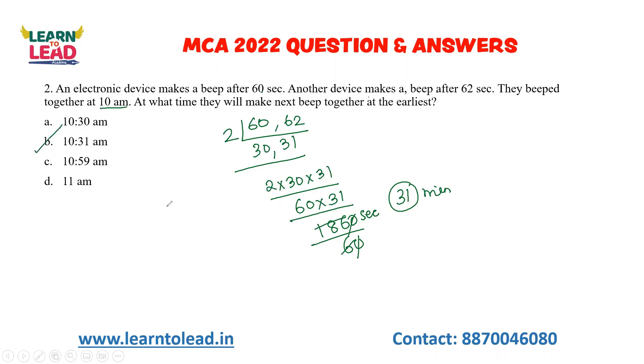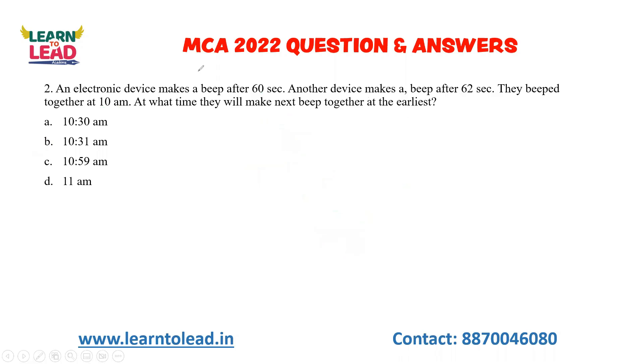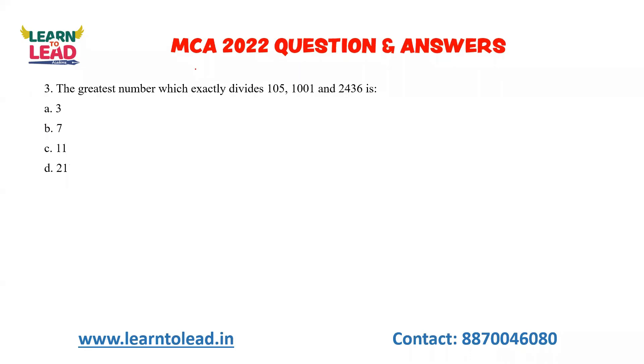In the repetition of activity problems, you have to find out the LCM. For greatest possible length problems, you find the HCF.